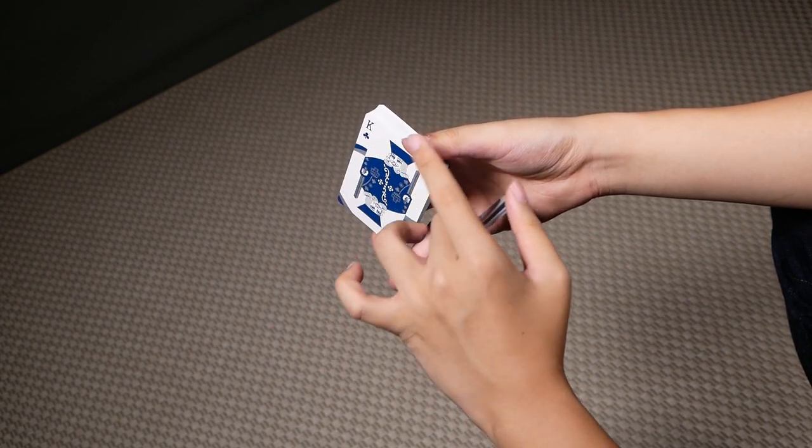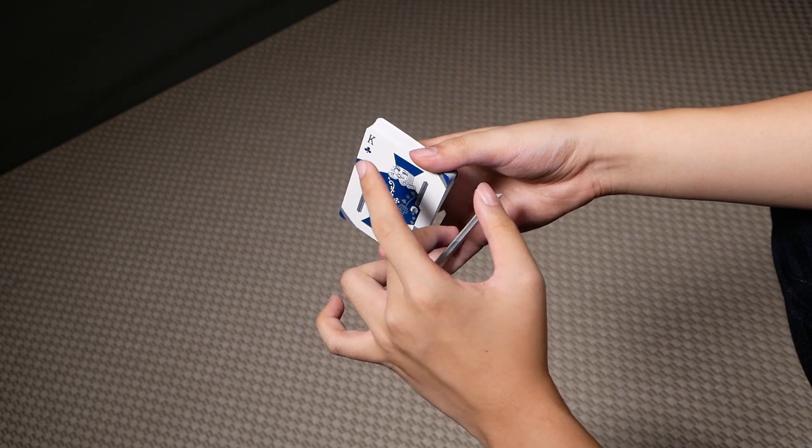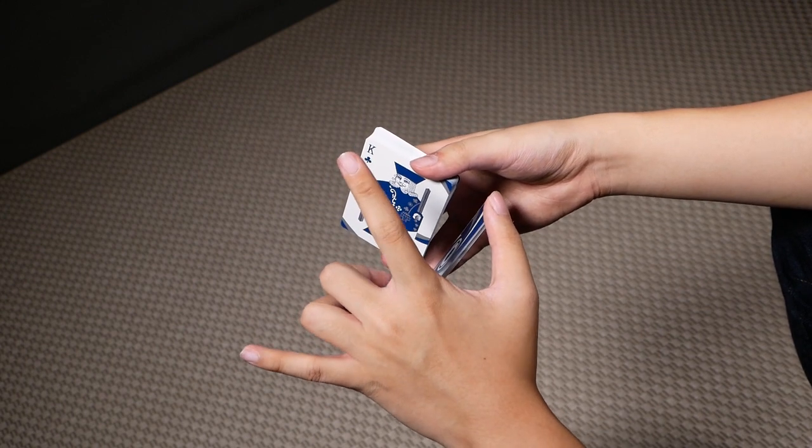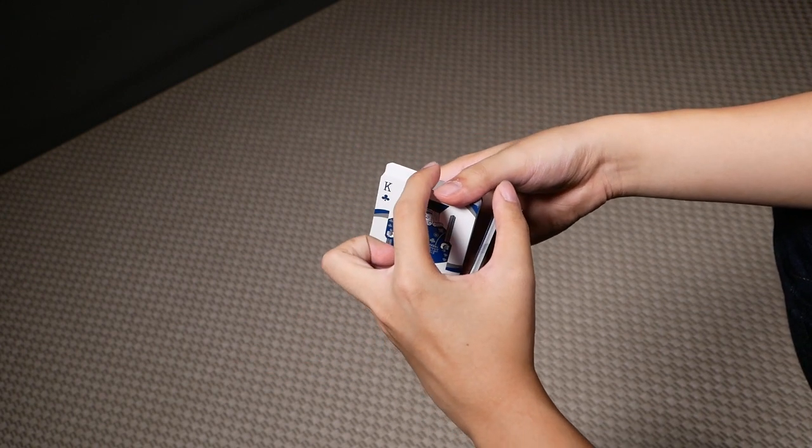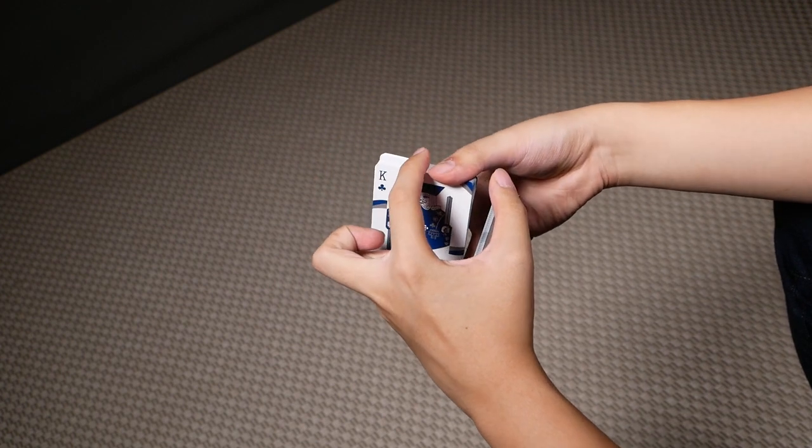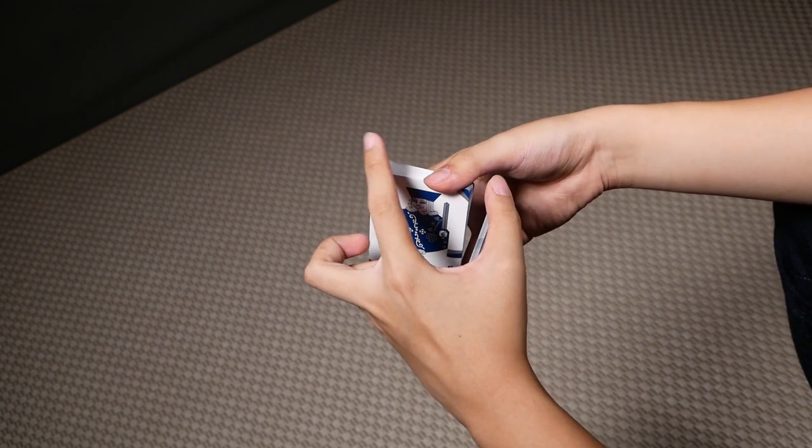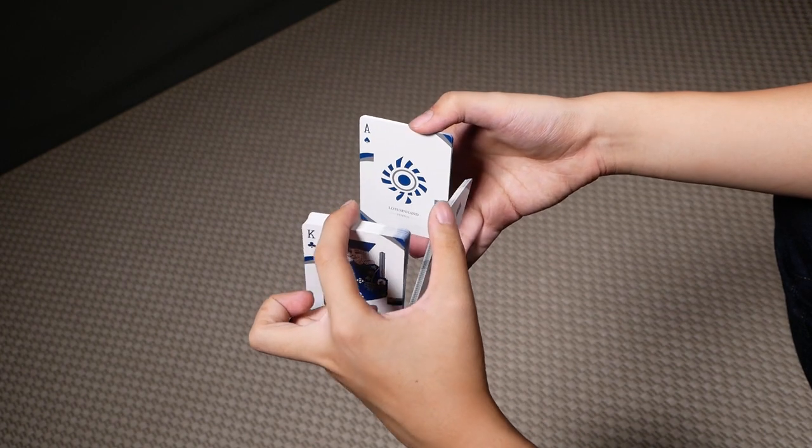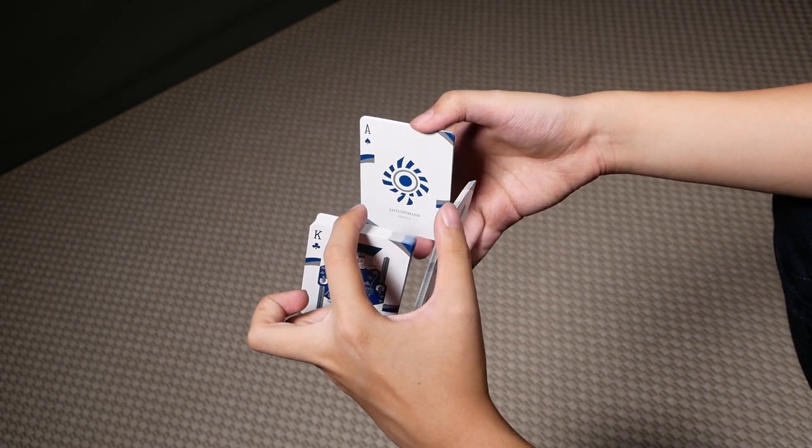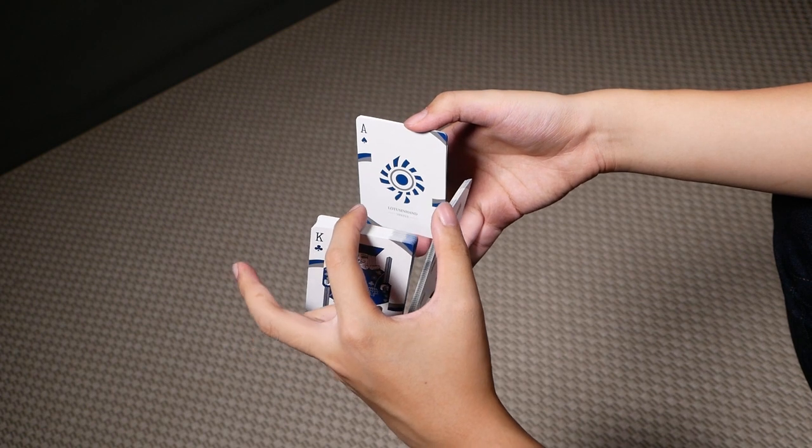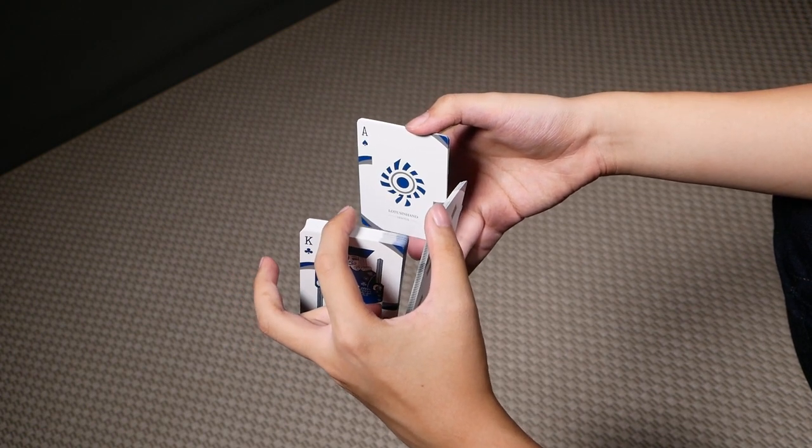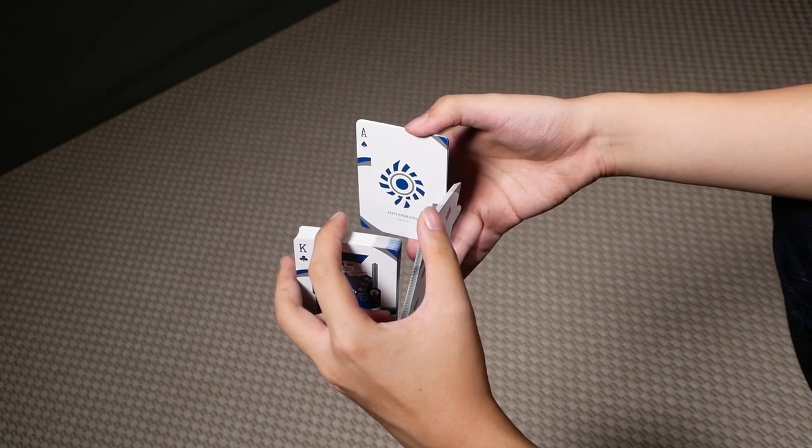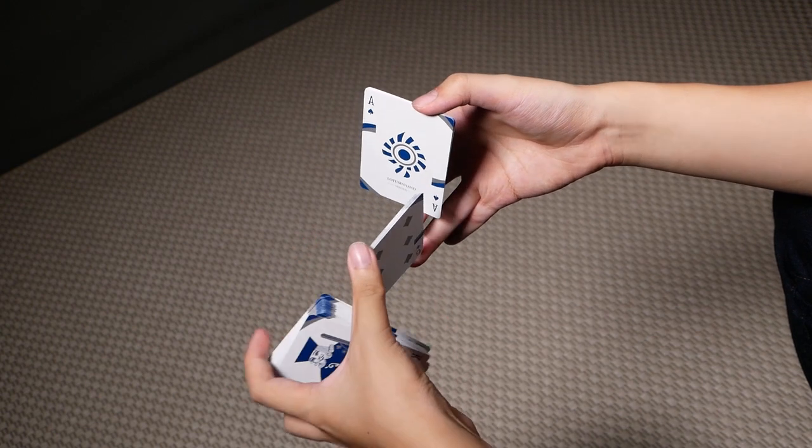Once you've done that, your left hand should naturally be in the position to use your index and pinky to clip this large packet here. And with these two fingers, you're going to split off a big portion of that packet. Once you've done that, you want your middle finger to contact the long edge of this large packet because you're going to be clipping it like so.